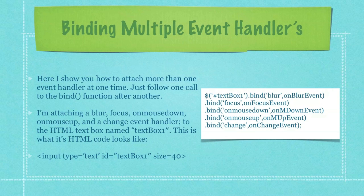I show you how to attach more than one event handler at one time. Just follow one call to the bind function after another, as you see here on the right side of your screen. I'm attaching a blur, focus, on mouse down, on mouse up, and a change event handler to the HTML text box named textbox1, and you can see the code that goes along with that text box in the third bolded item on the left side of your screen.